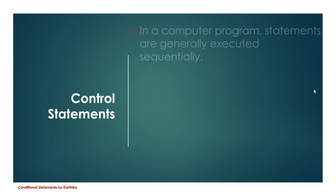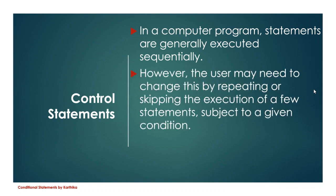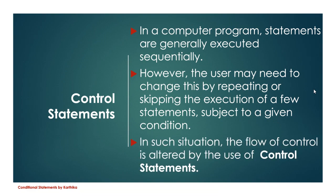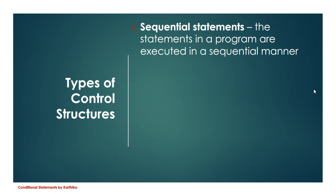That's what we are going to learn next: control statements. Usually a program runs step by step — first line, second line, third line, sequentially. But when you use control statements, you can skip a part of a program or repeat the same set of statements for a few steps based on a condition. Control statements are used to control the execution of a program. The first type is the sequential statement, where the first line executes, then the second, then the third, and so on.